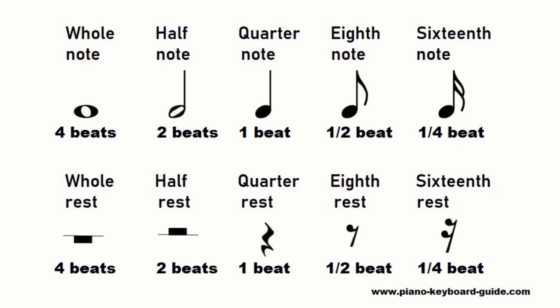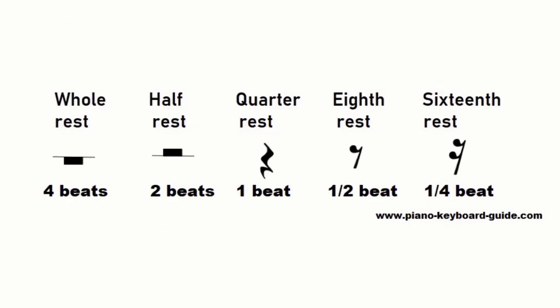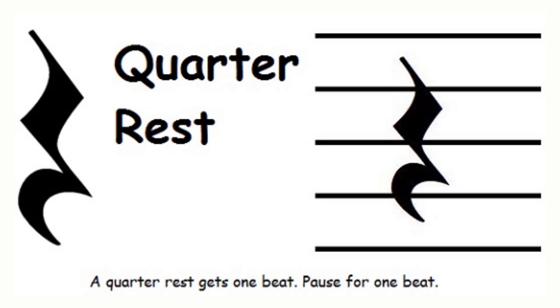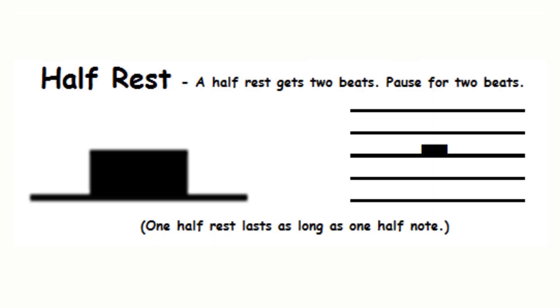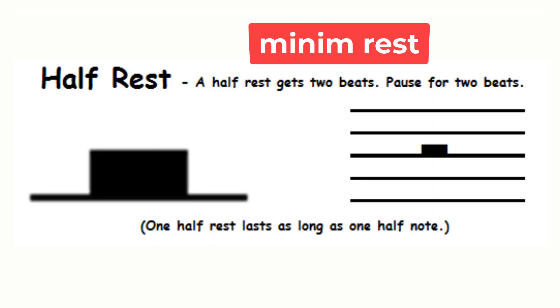Every type of note has a corresponding rest symbol that has the same time value. Types of rest include the quarter rest or crotchet rest, which lasts for one beat, and the half rest or minim rest, which lasts for two beats.